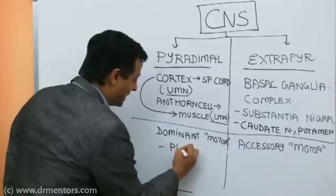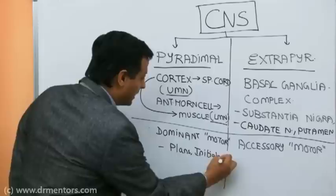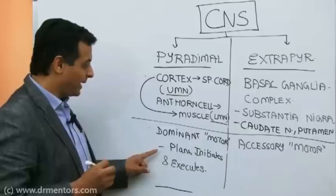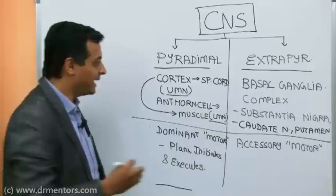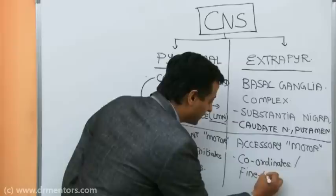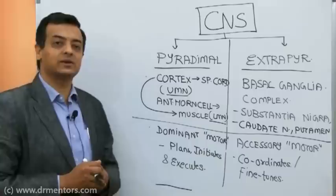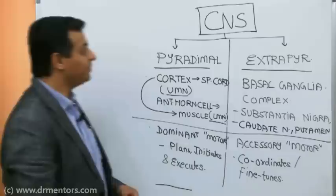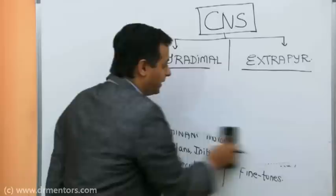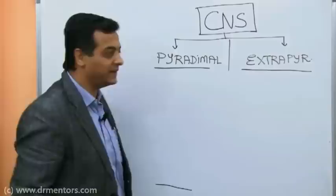The pyramidal system is the dominant motor pathway because it plans, initiates, and executes all motor movements. The extrapyramidal system, as the accessory pathway, only coordinates — it fine-tunes the movement done by the pyramidal tract. Once we know the anatomy and physiology we can easily understand the clinical medicine part.